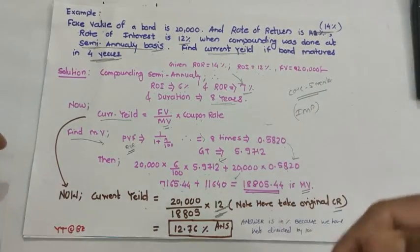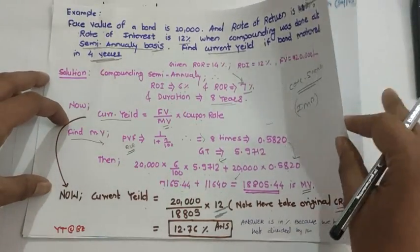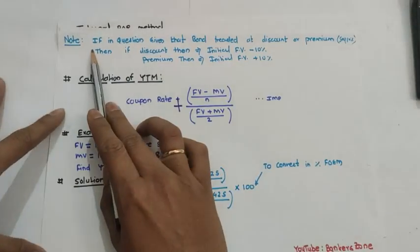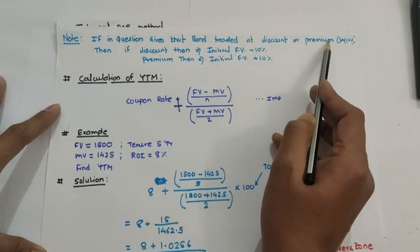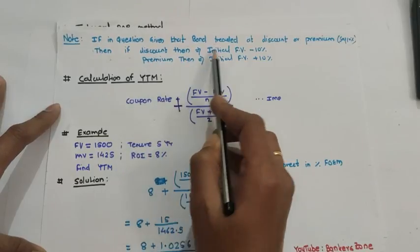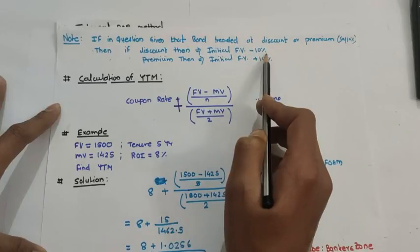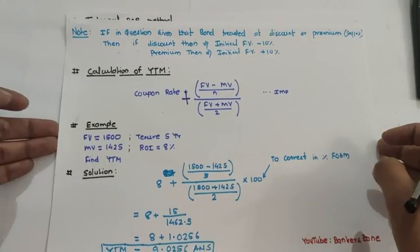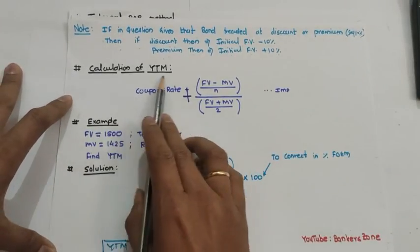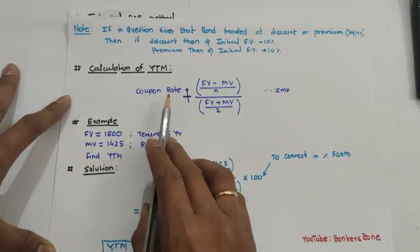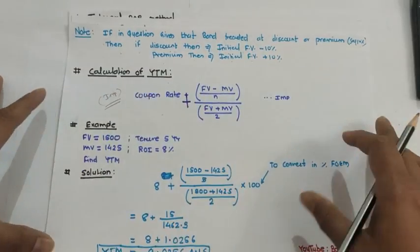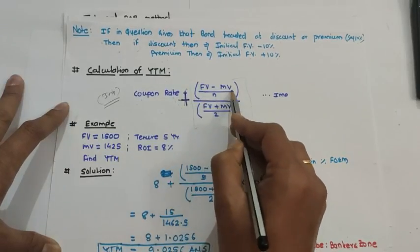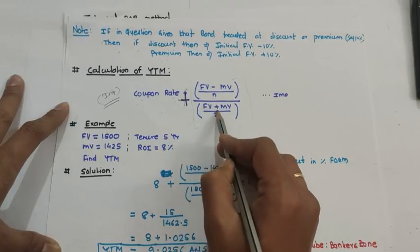Now we move to YTM — yield to maturity. One important note: if a bond is traded at a discount of 10%, then market value equals face value minus 10%; if at a premium of 10%, market value equals face value plus 10%. The YTM formula is: coupon rate plus (face value minus market value divided by n), all divided by (face value plus market value divided by 2), multiplied by 100.